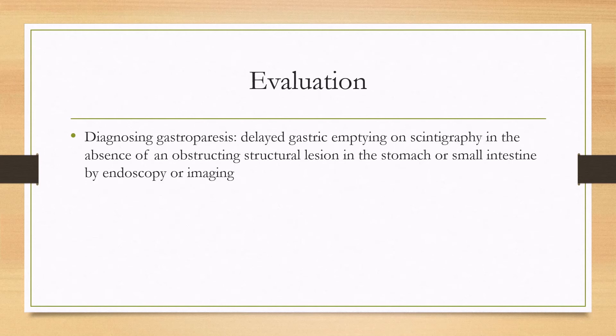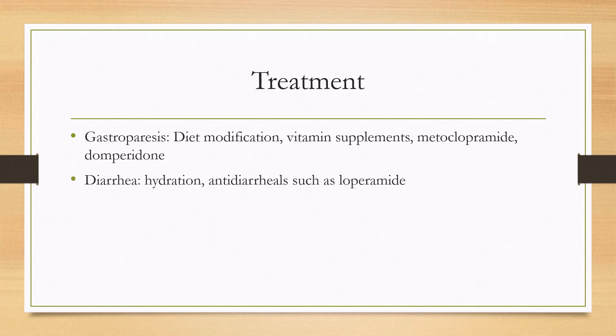Evaluation of gastroparesis begins with imaging to rule out any structural lesion in the stomach or small intestine, which can be done by endoscopy, CT, or MRI. Once you confirm there is no structural obstruction, you can look for delayed gastric emptying on scintigraphy, which will confirm the diagnosis.